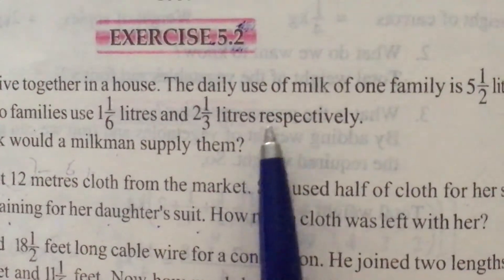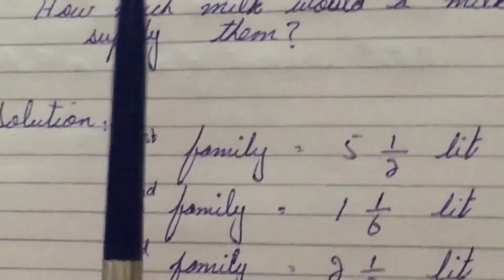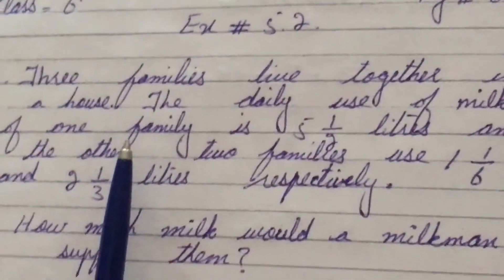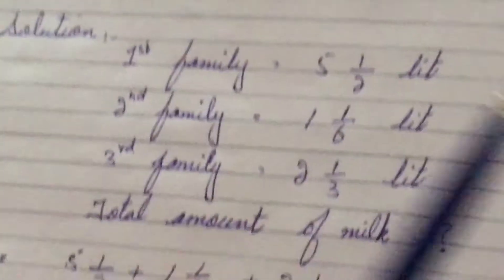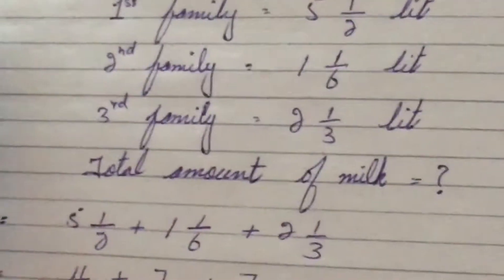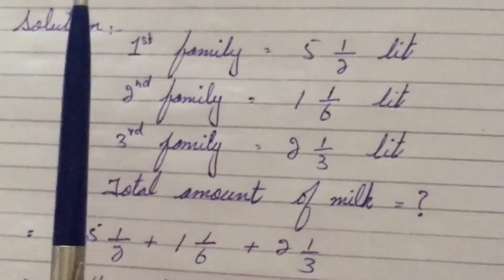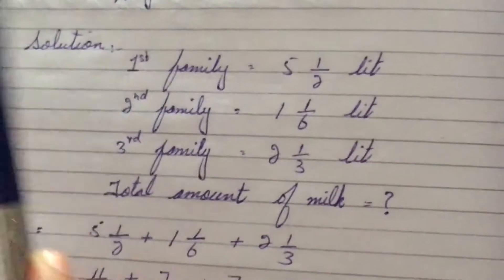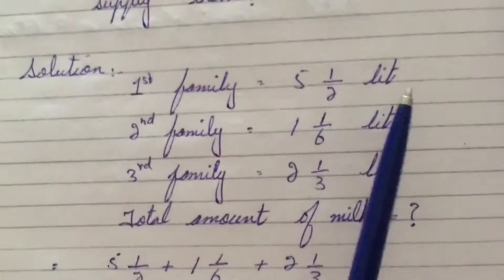I have written the question here as well. Now the solution is, you can see when all together is given, it means we have to add it. How much milk would a milkman supply them means we have to add the amount given to each family.